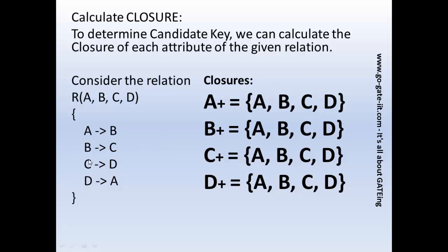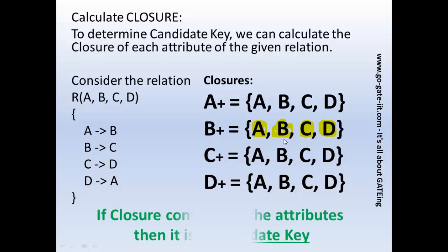Now let us calculate B+. B derives C, so we have B and C in the closure. C is now part of the set, and C derives D, so we add D. Then D derives A, so we add A. B+ therefore gives B, C, D, and A — B also derives all the attributes of the given relation. Since both A and B closures contain all attributes, A, B, C, and D are individually candidate keys for the given relation R.